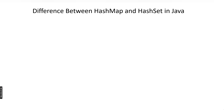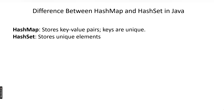HashMap is a class which implements the Map interface, and HashSet is a class which implements the Set interface. We already know Map stores values in the form of key-value pairs, so HashMap is used to store values in key-value pair form.